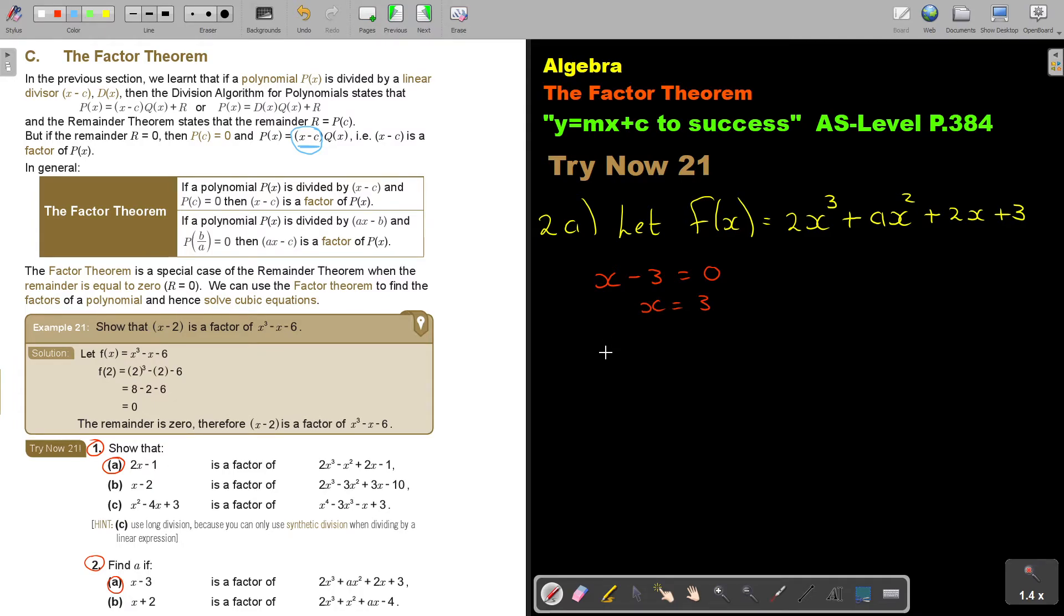So, basically, I'm just doing that. I go and I put in that 3. So, 3 times 3, it's 27, times that 2, so that will be 54, plus 3 times 3 is 9a, plus 6, plus 3, and that's equal to 0. So, I will have 9a is equal.